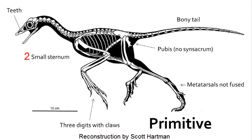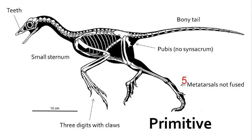Two, it has a small sternum which lacks a keel, similar to what we saw in Velociraptor. Three, a pubis bone, ilium, and ischium that are not fused into a synsacrum. Four, that long bony tail — birds lack bony tails. Five, the metatarsals in the foot are not fused into a tarsometatarsus bone like in birds. Six, Archaeopteryx has three digits in the hand rather than a fused carpometacarpus bone.